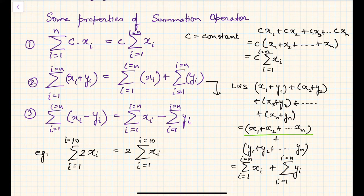The third property is similar. Instead of plus, there is minus. If there is summation on two variables together, we can split it into two summations. If there is summation on difference of two variables, that equals summation of the first variable minus summation of the second variable.